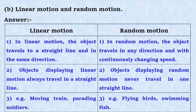In linear motion, the object travels in a straight line and in the same direction. In random motion, the object travels in any direction and with continuously changing speed.